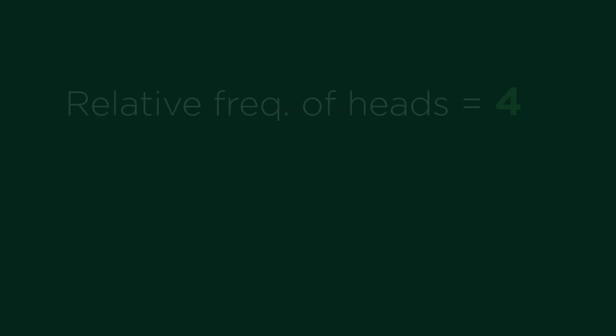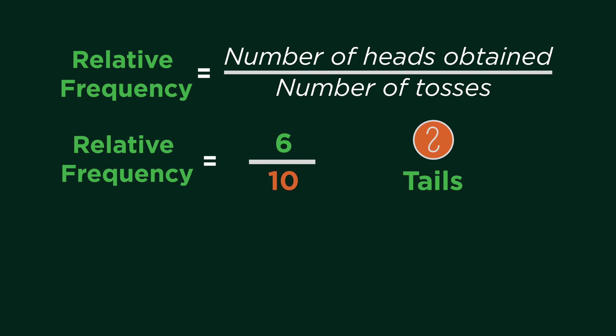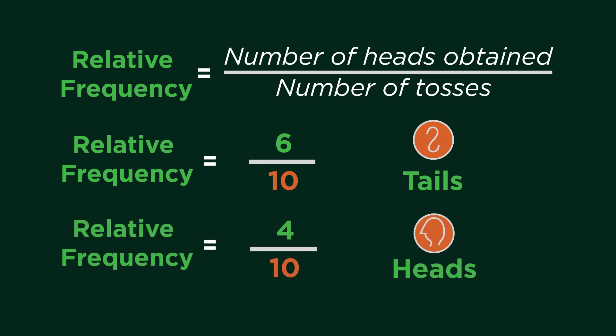Well, the frequency of heads is 4, and the frequency of tails is 6, so we use the following method to help you calculate. Relative frequency equals the number of heads obtained over the number of tosses. That means the relative frequency of getting tails is 6 out of 10, and the relative frequency of getting heads is 4 out of 10.